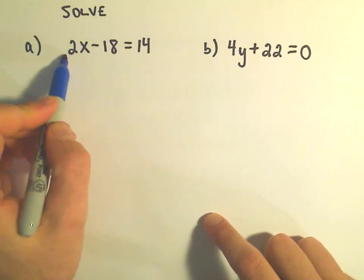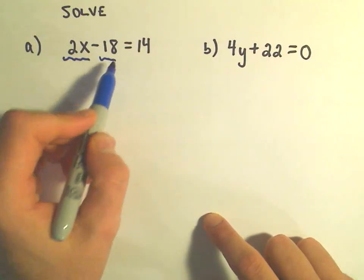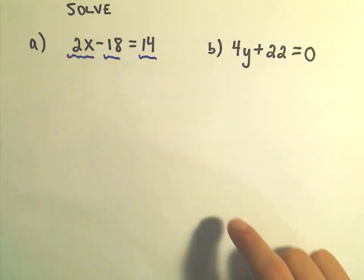When I look at this, I see one, two, three terms. I see the 2x, I see this minus 18, and then I see this 14 on the other side.